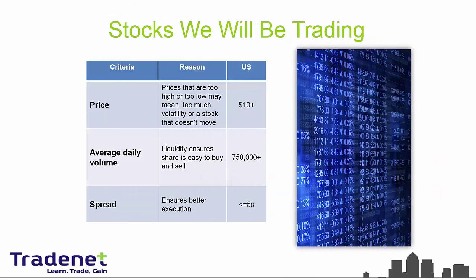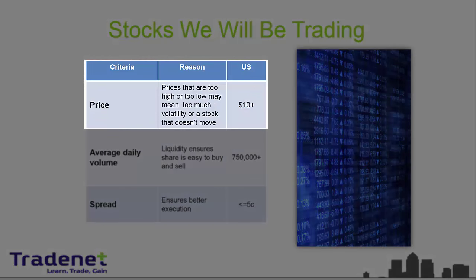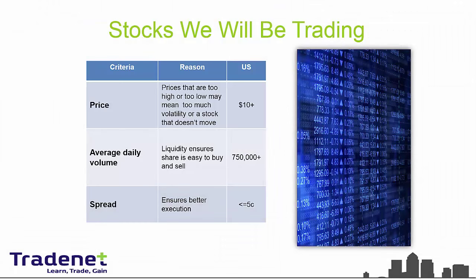Let's talk about the stocks that we will be trading. The first criteria is the price. We will usually not be trading stocks that are priced under $10. The reason for that is that institutional traders are usually not allowed to buy stocks that are under $10. Now, there are several reasons for that which I will not get into right now.